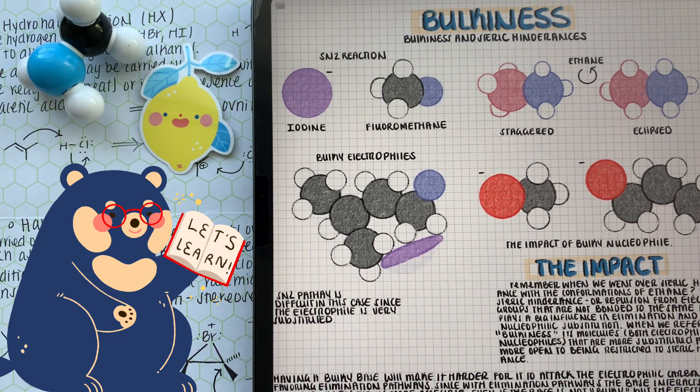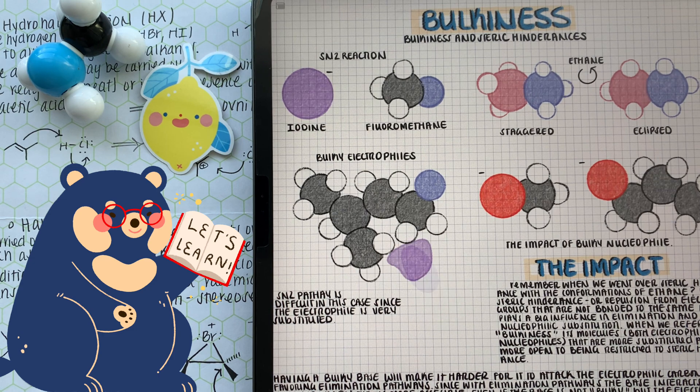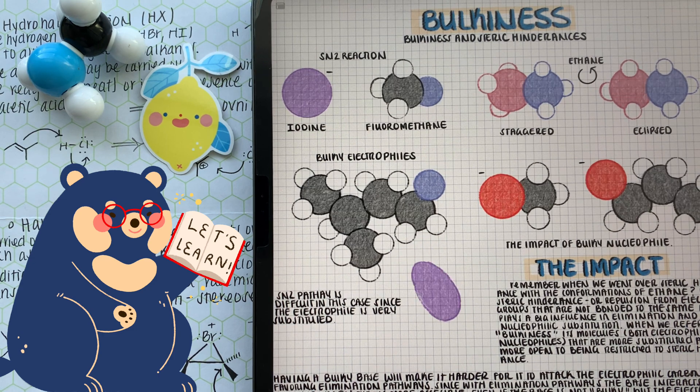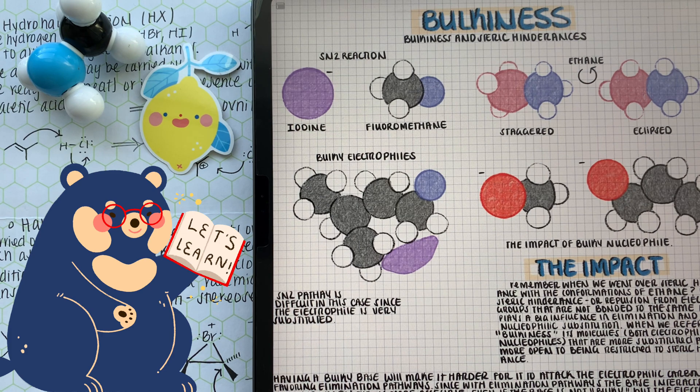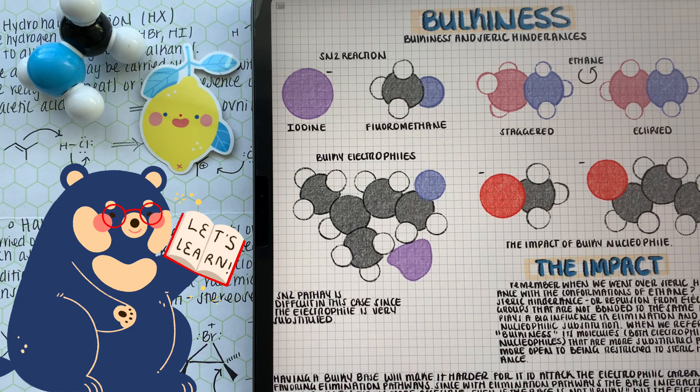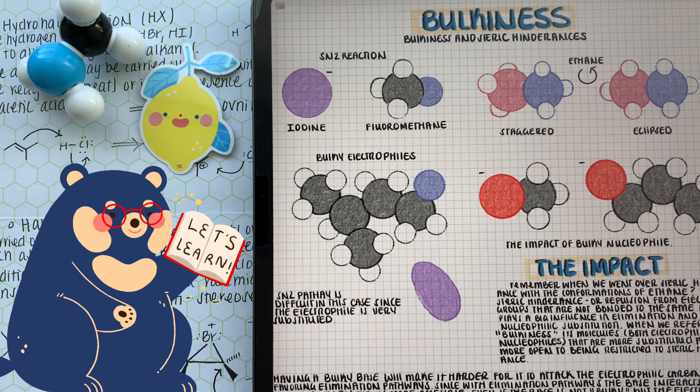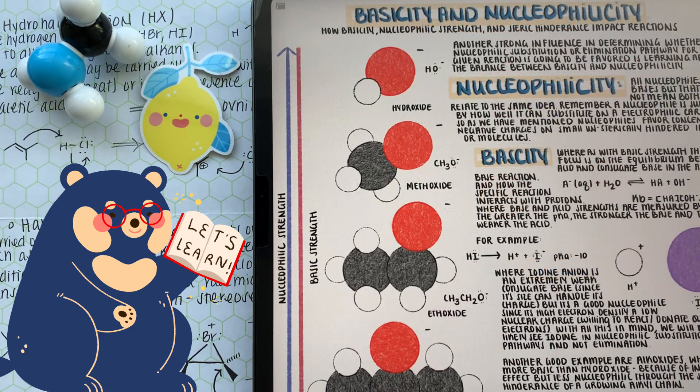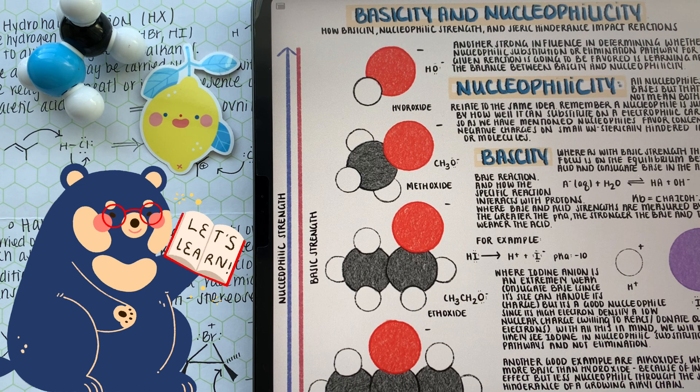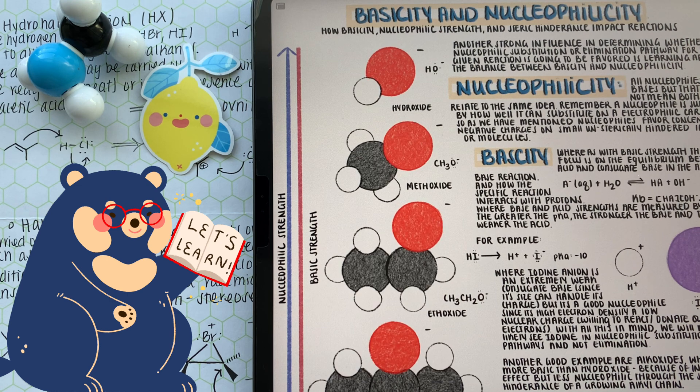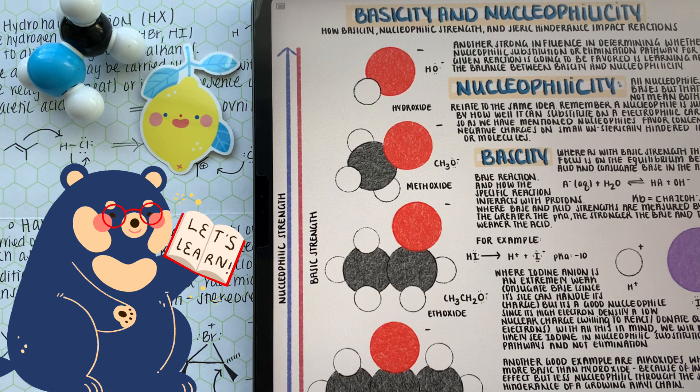We can have branched or bulky nucleophiles too. For example, methoxide would be a lot smaller and easier to attack the electrophile than something like propoxide, because propoxide has three carbons and methoxide has one. Next one can be kind of tricky, but it's going to help us determine whether we're going to do elimination or substitution in some scenarios.